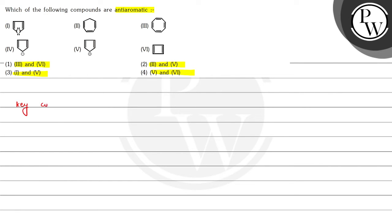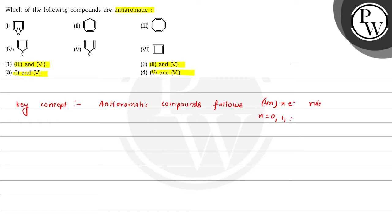We can write our key concept: anti-aromatic compounds follow the 4n pi electron rule, where the value of n is equal to 0, 1, 2, 3, and so on. So here we can check the number of pi electrons in these given compounds.